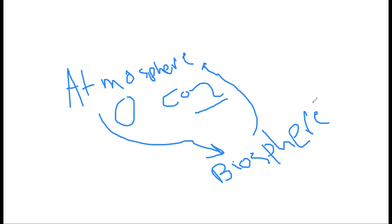When animals and plants and humans breathe, they release or give off carbon dioxide. So notice the interaction between the atmosphere and the biosphere: gases flow in both directions between these two spheres.